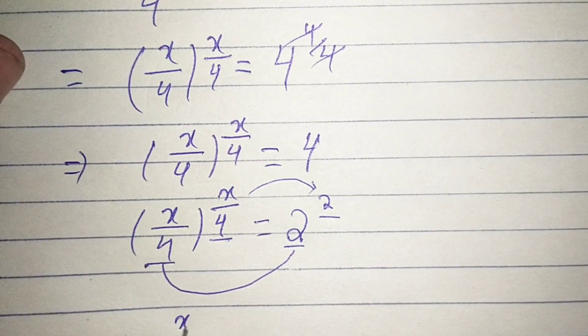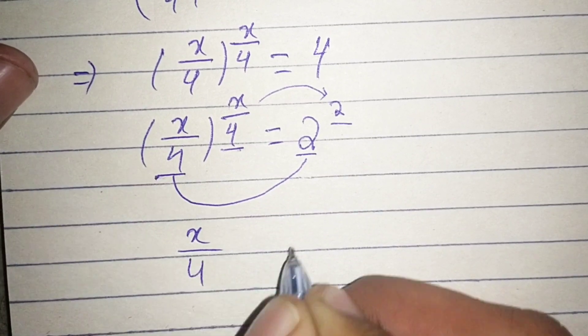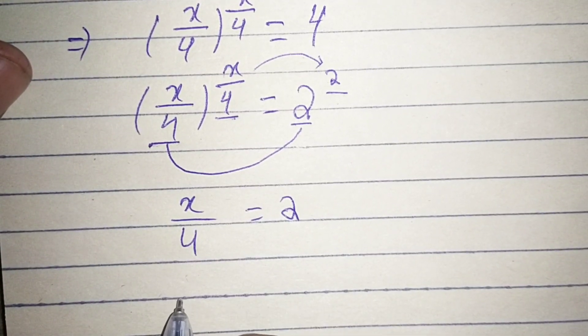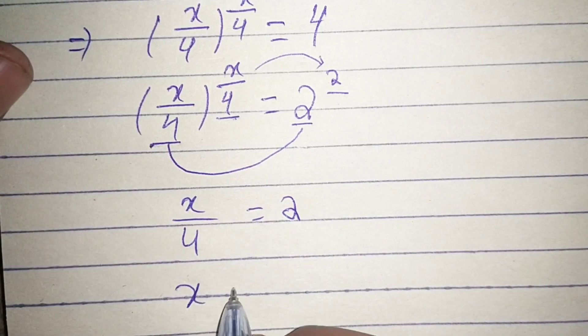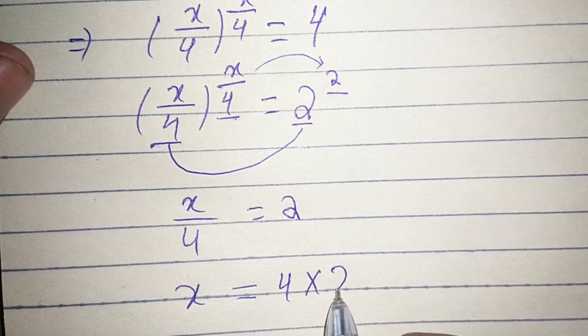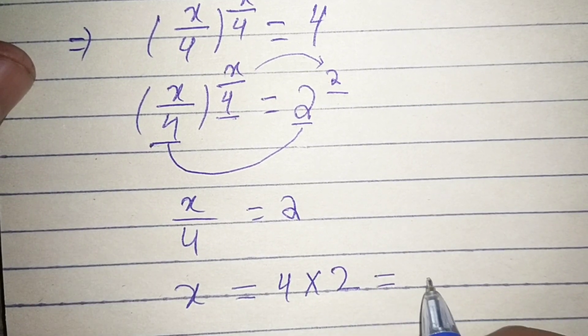So here we have x by 4 and the exponent are equal to 2. So here, x is equal to 4 multiplied by 2, which equals 8.